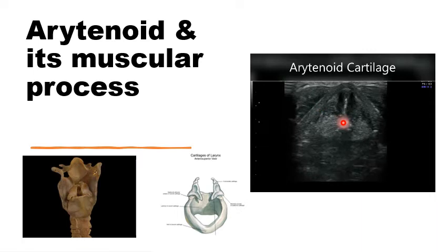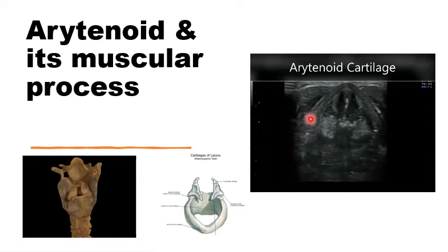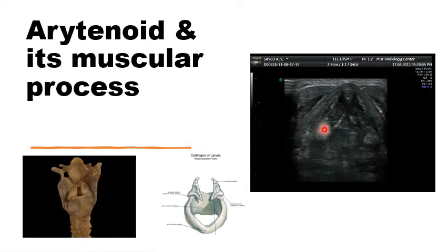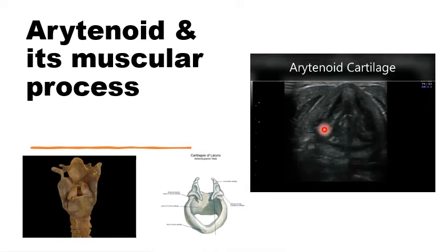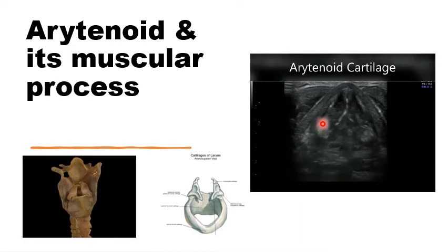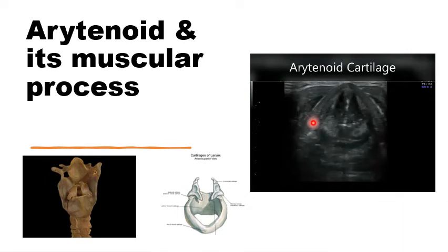The older versions of arytenoid surgery approached the arytenoid by removing the posterior part of the thyroid ala, giving direct, wide access to the arytenoid. The modern keyhole techniques approach the arytenoid cartilage — the muscular process and the lateral cricoarytenoid — through a small, tiny window created in the thyroid cartilage at this area, just in front of the oblique line of the thyroid.